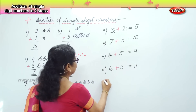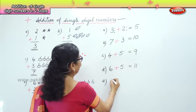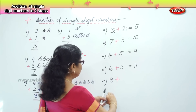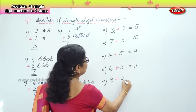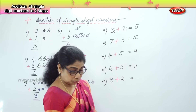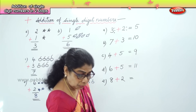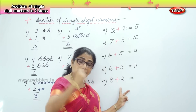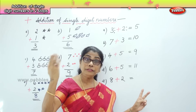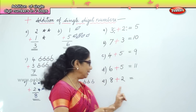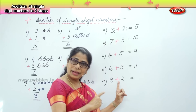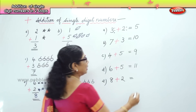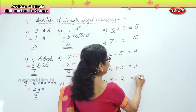Another sum: 8 plus 2. What is 8 plus 2? Put 8 in the mind — the big number — and hold up 2 fingers. After 8: 9 and 10. So you get the answer 10. Is it easy?